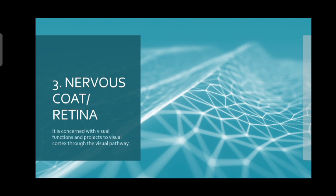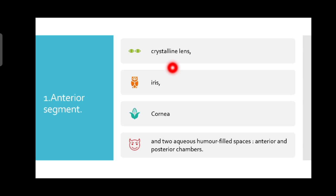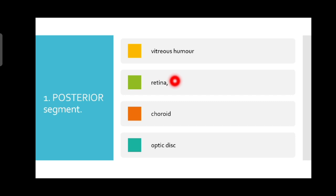Now let's talk about the segments of the eyeball. There are two segments: the anterior and the posterior. The anterior segment consists of the crystalline lens, the iris, and the cornea. The anterior chamber has two aqueous humor-filled spaces called the anterior and the posterior chamber. The posterior segment consists of the vitreous humor, the retina, the choroid, and the optic disc — which is where the optic nerve begins and attaches to the retina.